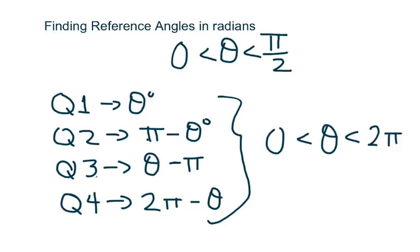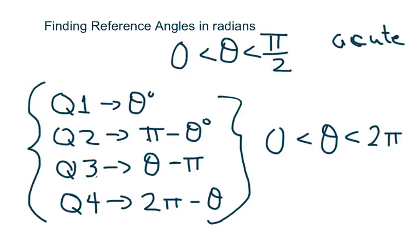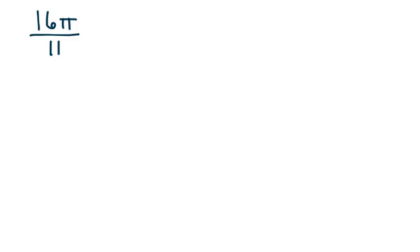Hi everyone, this is finding reference angles in radians, and the ones we're going to do are a little harder than normal. A reference angle is an acute angle between zero and pi over 2. Remember that the quadrantal angles are not reference angles. We're going to do six examples, so here are the formulas you use.